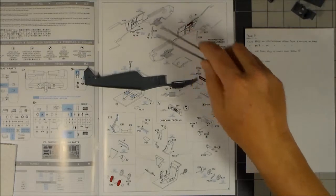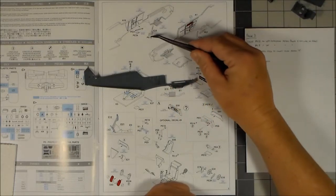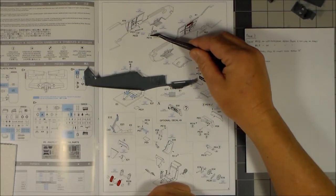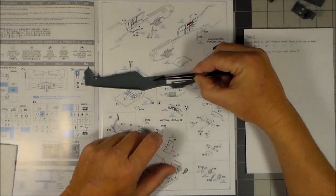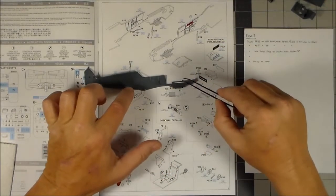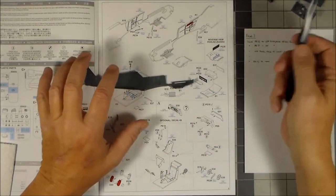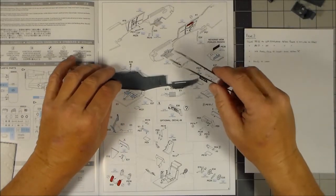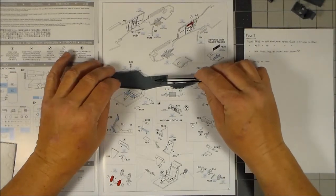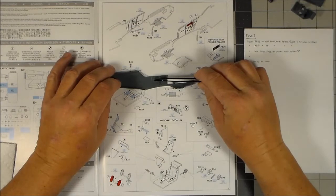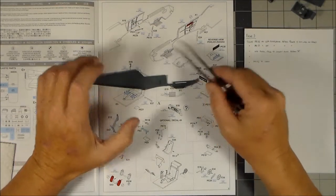On this first section here, everything is done except for this PE 15 which is a pre-painted part. It goes right here. So I'll spray the interior color on this part and with everything else at the same time.